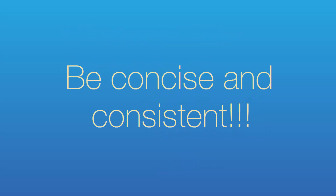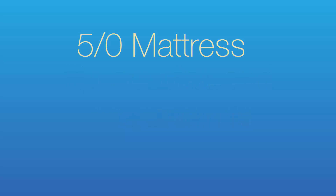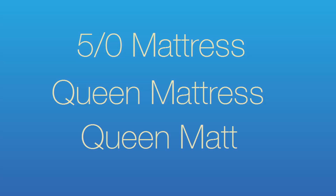It is very important that you be concise and consistent in the information that you provide us with. Inconsistency can lead to problems in locating the information you are searching for. For example, if you had used several variations for a queen mattress and you want to search for a specific queen mattress, you may have to look under 5x0 mattress, queen mattress, or even queen mat to find what you are searching for. Therefore, it is very important that you be precise and consistent with your naming criteria.